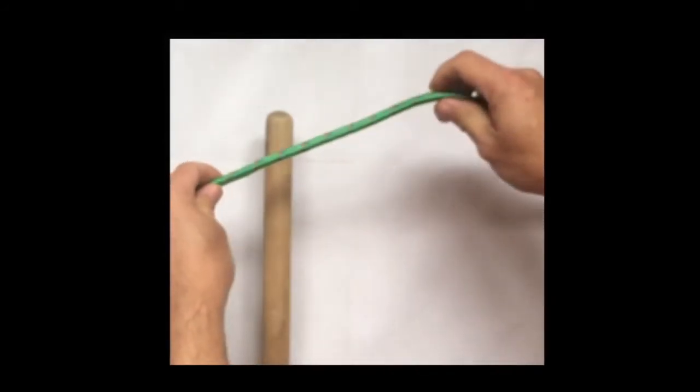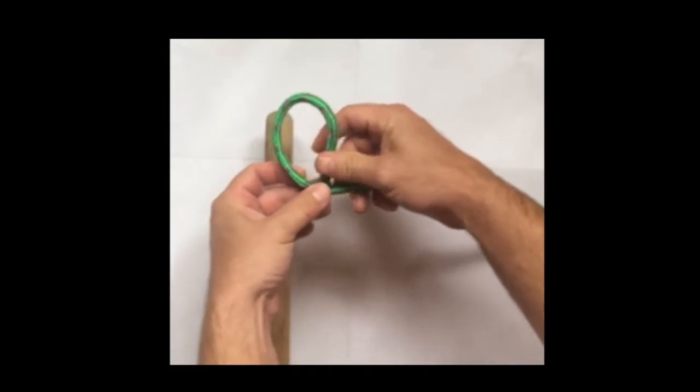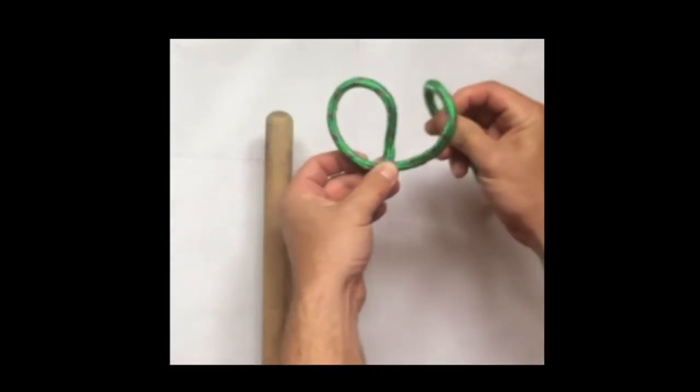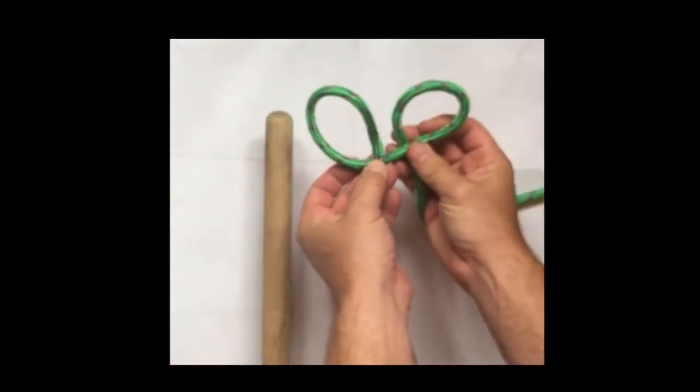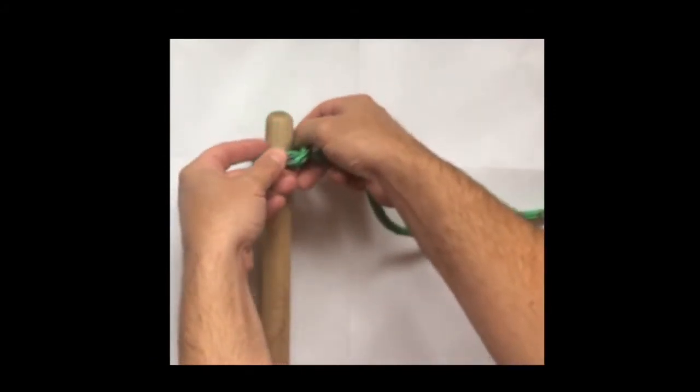Alternatively, if you can see the end of the spar, you can make a loop, and then another loop, cross them over, and slip over the end of the spar, pulling up gently.